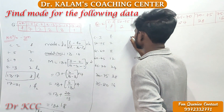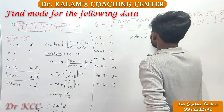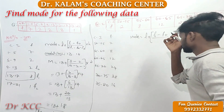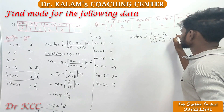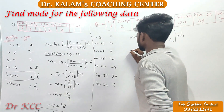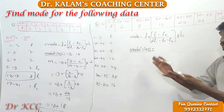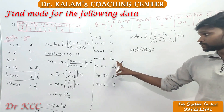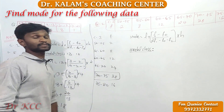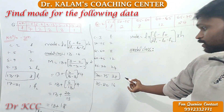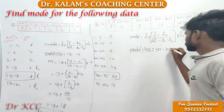First write the formula: Mode = L plus F1 minus F0, divided by 2 into F1 minus F0 minus F2, into H. Now find the model class. Look at the data — 38 members repeated the most times in the 70 to 75 group. So 70 to 75 is your modal class. Now fix frequencies: label the modal class F1, the class before it F0, and the class after F2 — that is 0, 1, 2.